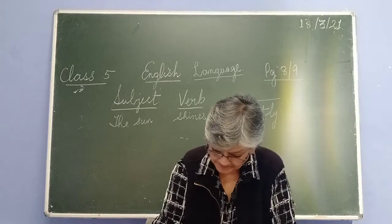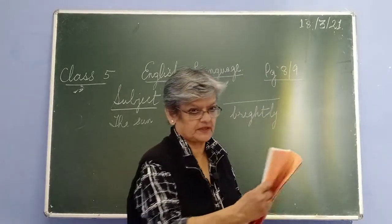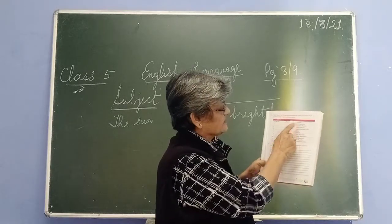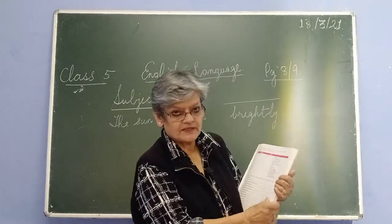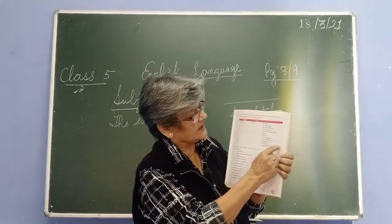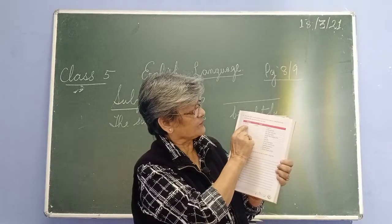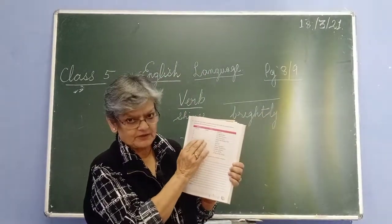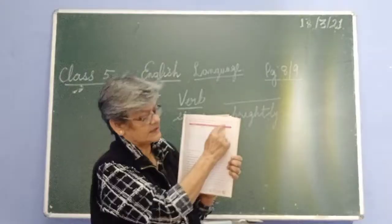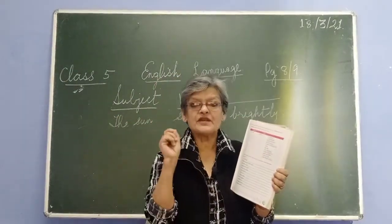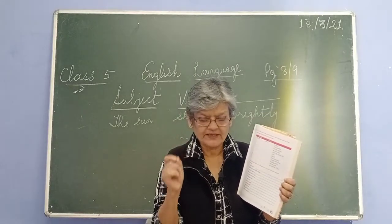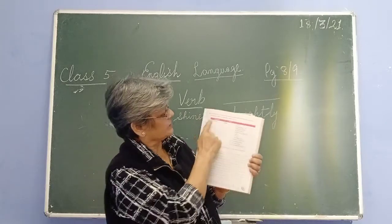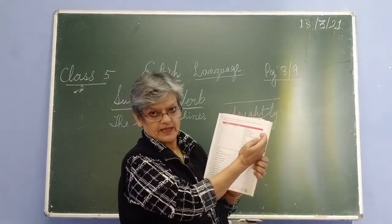There is a table you can see — 'the sun shines brightly.' Now when you do it in your copies, please don't draw this table. Write the date on every page you do. Don't forget — please write the date so that we know which page we are doing. So: subject, verb, and what it is doing. Have you understood?